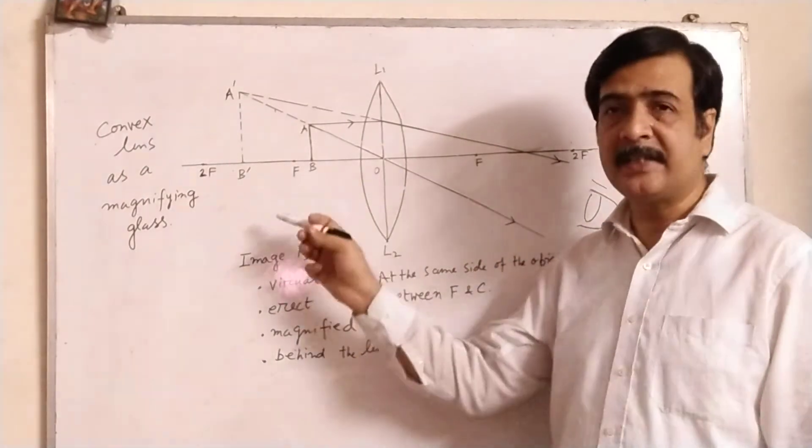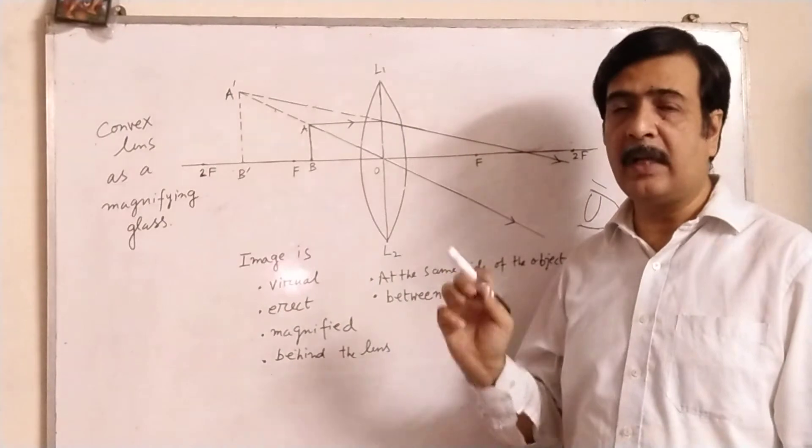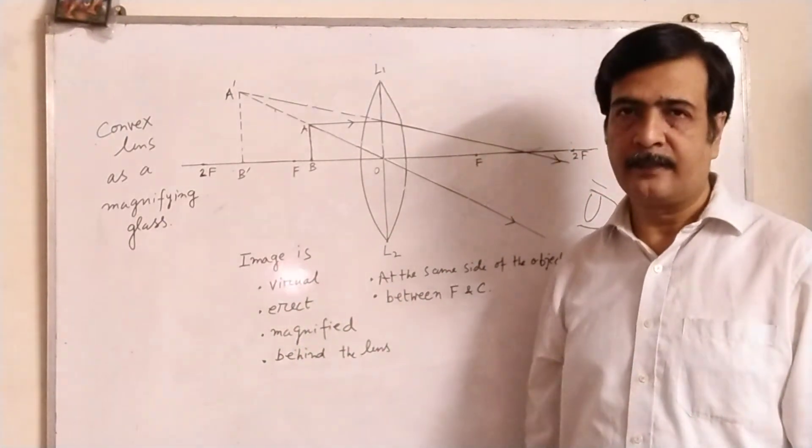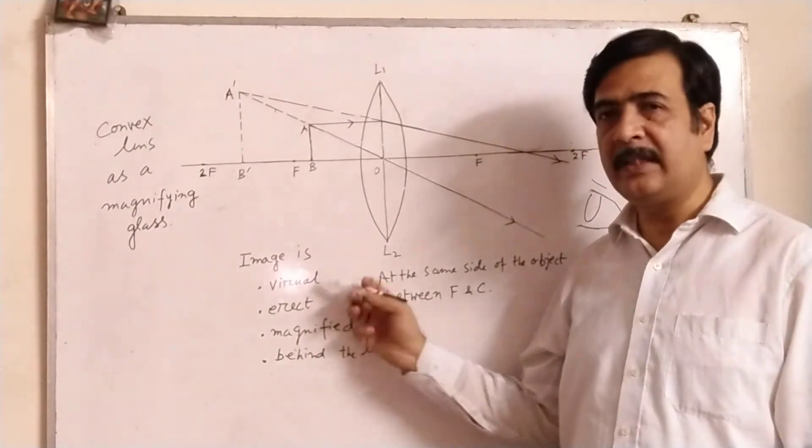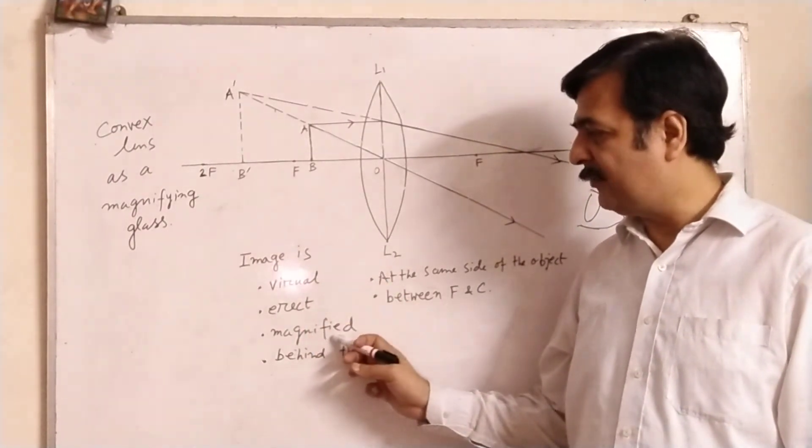So all the properties of the image: condition of the object is that the object is placed between the focus and the optical center of the convex lens. And what are the characteristics of the image? Image is virtual. It is erect. Virtual, if it is virtual, obviously it is erect. Another, it is magnified.